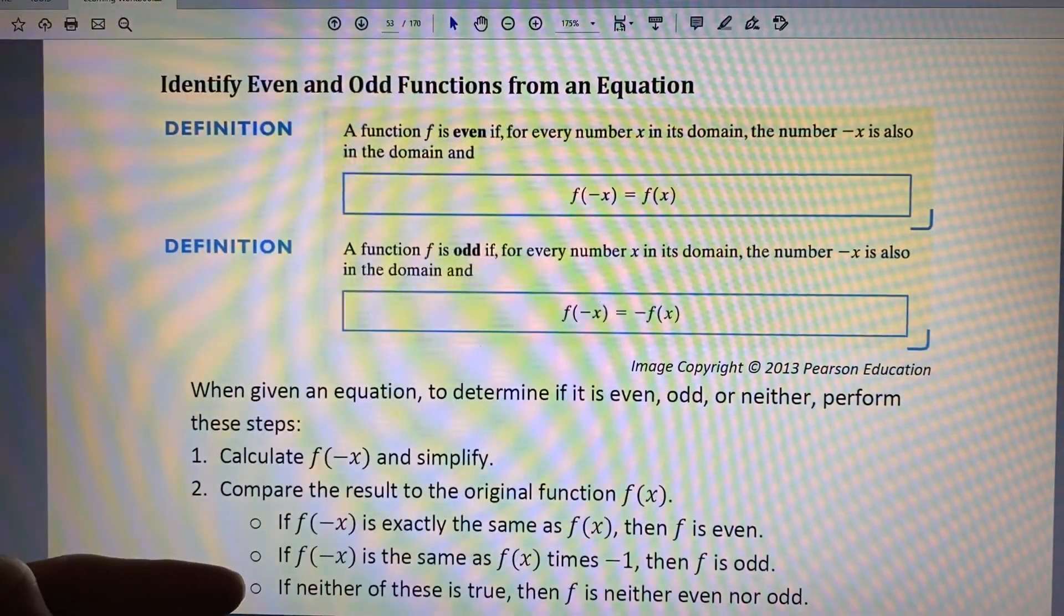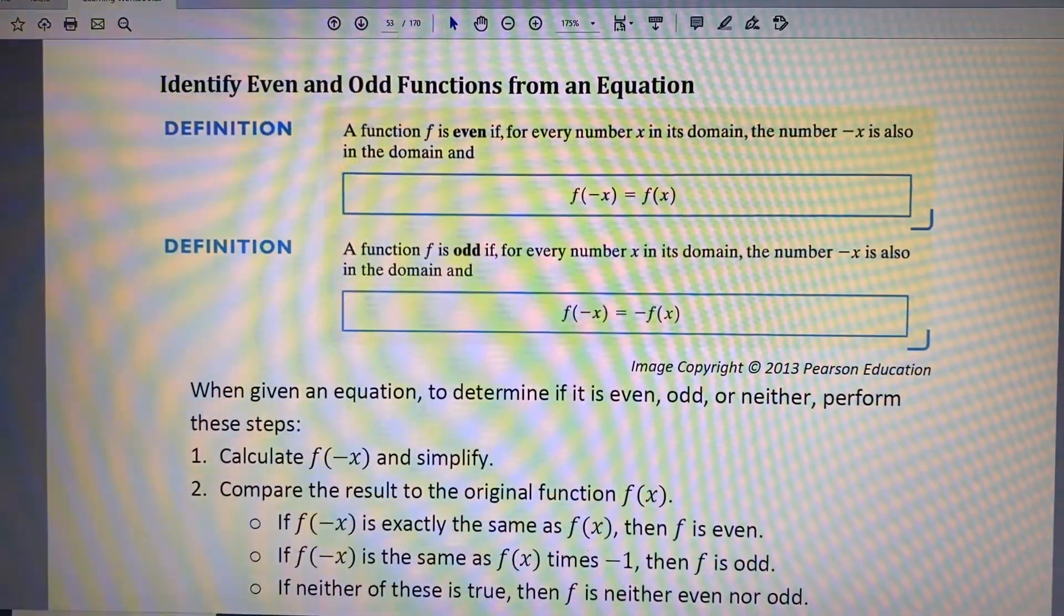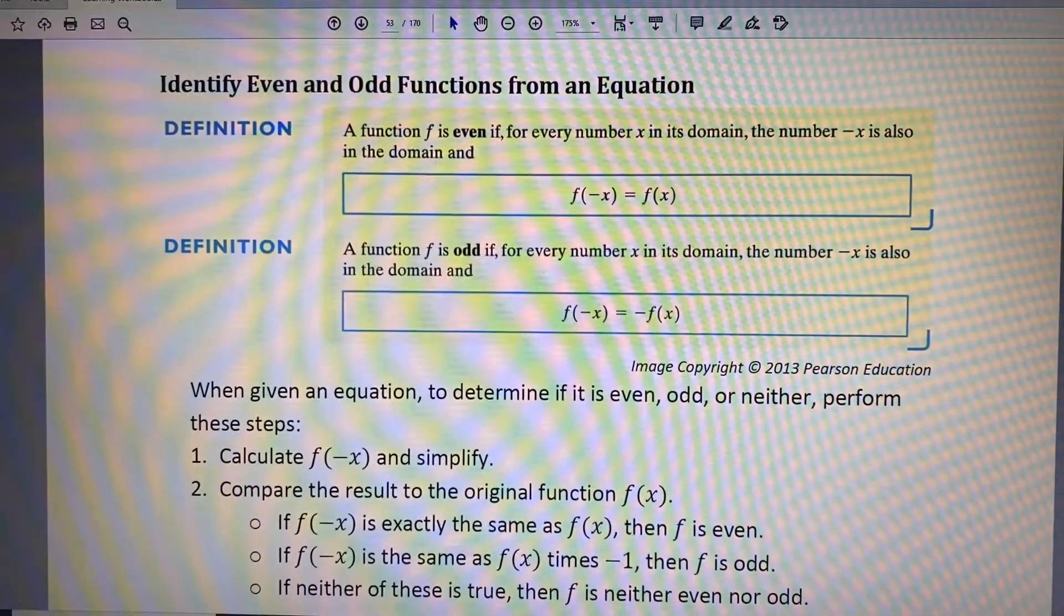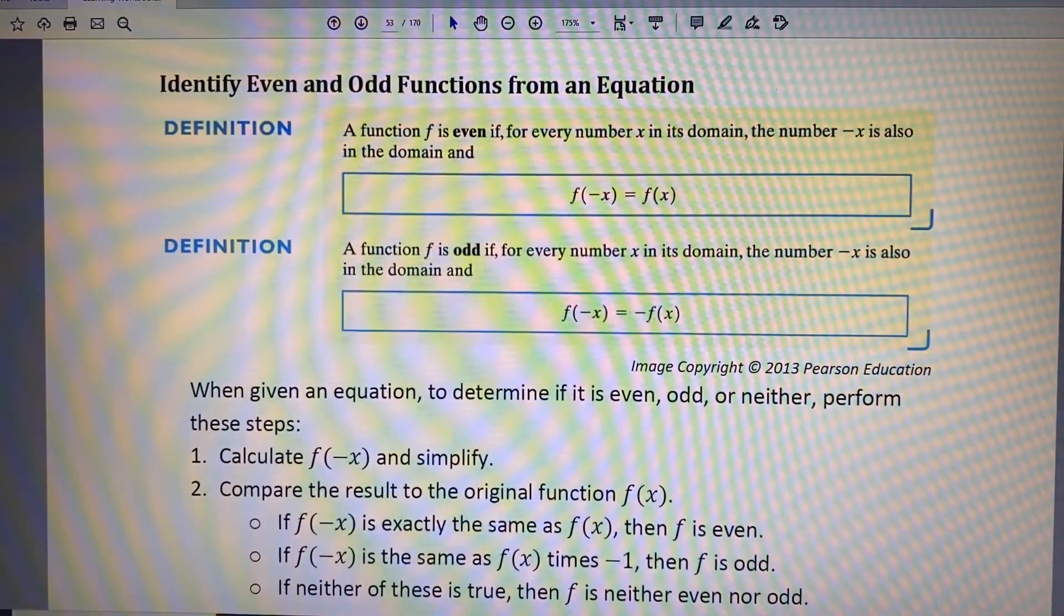Finally, if neither of these conditions is true, then we say that f is neither even nor odd. This concept is best illustrated through several examples.